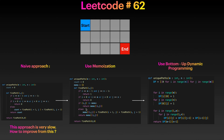If (i, j) is in our memoization dictionary, that means we have already seen this subproblem before, so we just return memo[i][j]. Otherwise, we compute find_path(i+1, j) plus find_path(i, j+1), store the result in memoization[i][j], and then return it. That's the memoization, or top-down, approach.